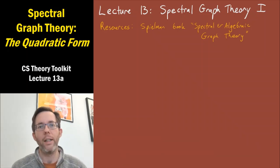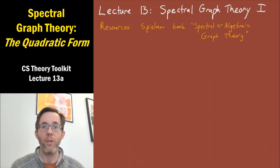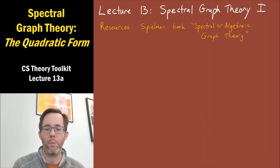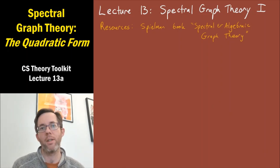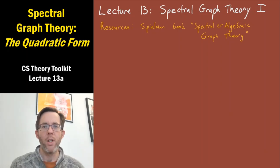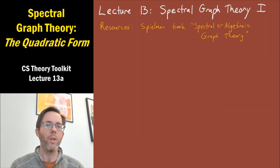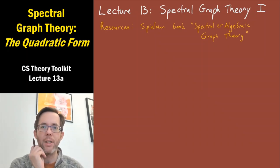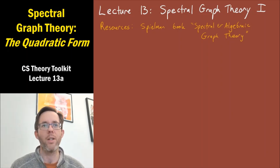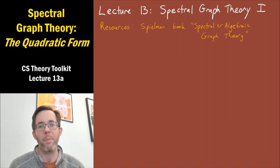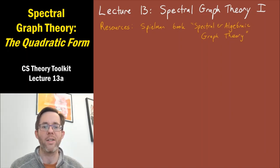Welcome to lecture 13. This is going to be the first in three or four lectures about spectral graph theory. A nice resource for the topic is Dan Spielman's newest book, Spectral and Algebraic Graph Theory. Spectral graph theory is a really nice topic to study in the CS Theory Toolkit class because it's equally beloved by complexity theorists and algorithmic theorists — the two main camps in the area. Spectral graph theory intersects with both of these camps' interests, so it's a nice central topic.